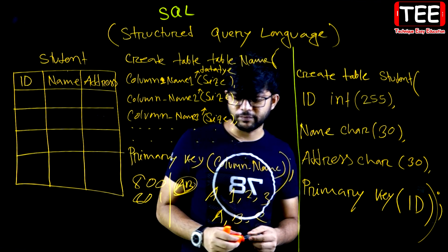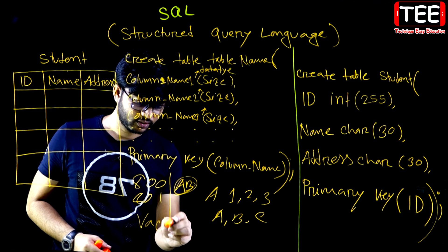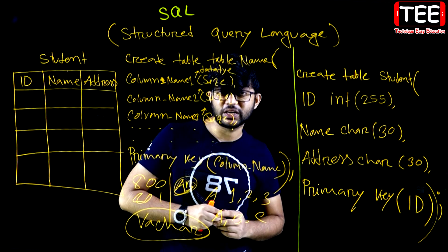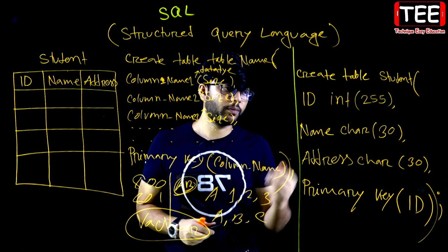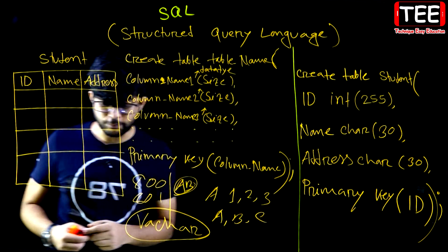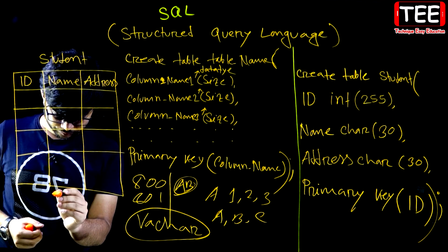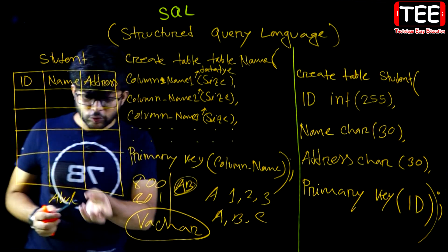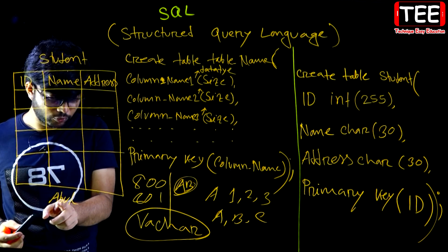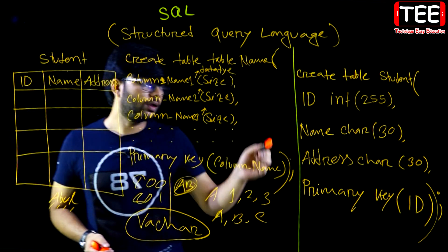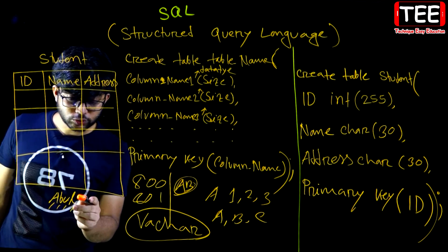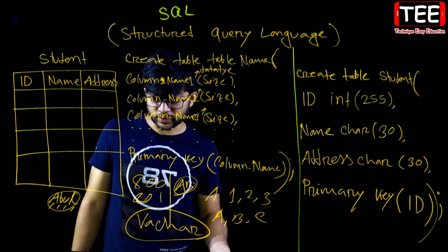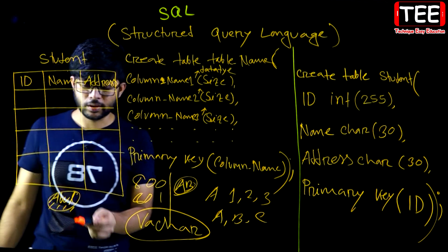In the next class we use VARCHAR. VARCHAR is a dynamic data type — that is the difference. You can use the data input. The name is Abul — you can use Abul. You can use the name of the character. The name is Abul — the characters are A, B, C. The size is set to 30, so you will do a small size member.